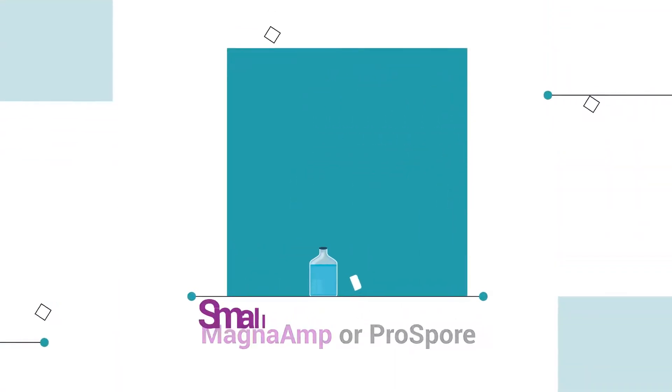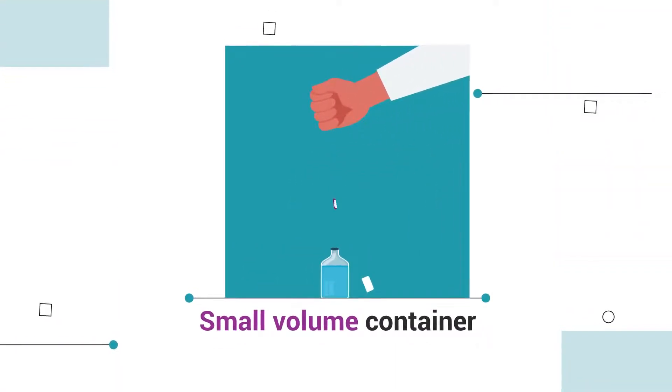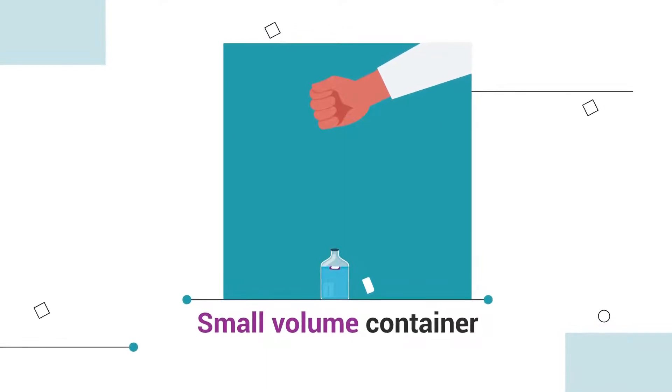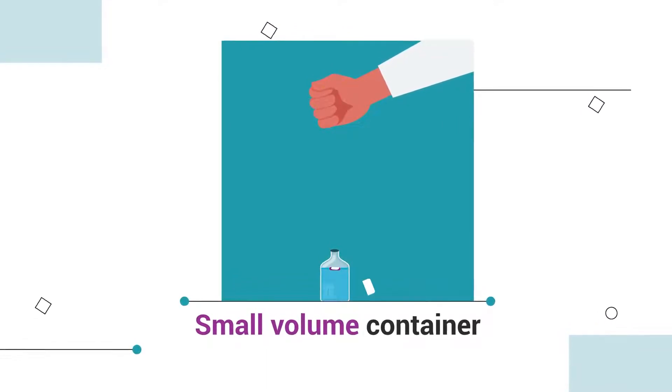With a small volume container, you can just drop the ampule directly into the liquid, since the lag time to temperature is negligible.